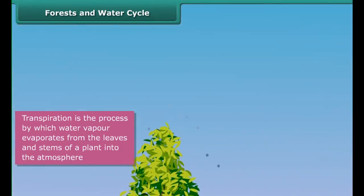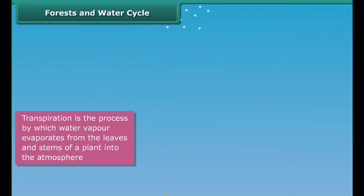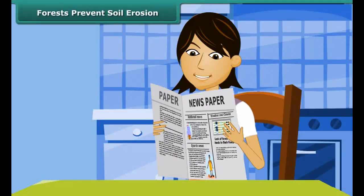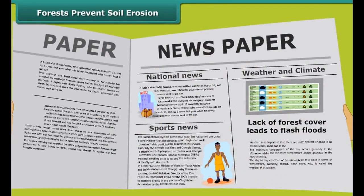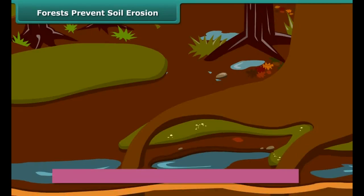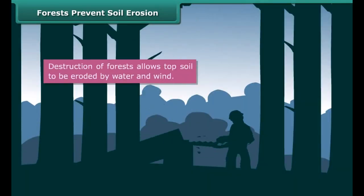That is why forests are called the green lungs of the earth. Forests also play an important role in the water cycle through transpiration. Transpiration is the process by which water vapor evaporates from the leaves and stems of a plant into the atmosphere. It then rises up in the air, and when it comes in contact with a cooler surface, it condenses and forms clouds. When the water droplets in the clouds become heavy, they fall down as rain. The rainwater flows into streams, rivers, and oceans, thereby completing the water cycle.